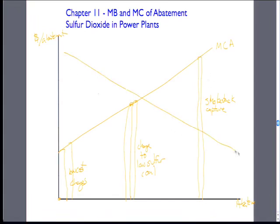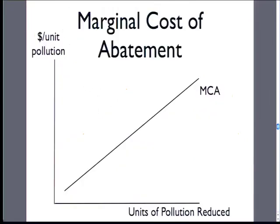We want to look at our marginal benefits curve. Here we have a whole bunch of acid rain, and here we have a lot less acid rain. So our impact on the environment of cleaning up our coal plants is really high in the beginning, and it's going down as the pollution gets cleaned up. So we think of our marginal cost of abatement going up.